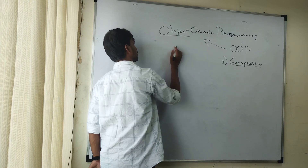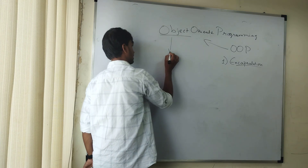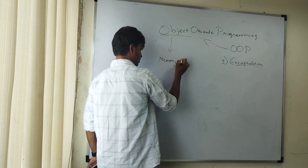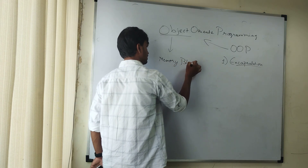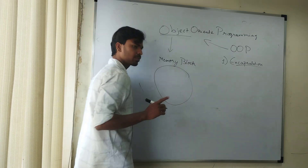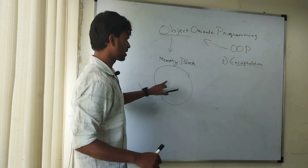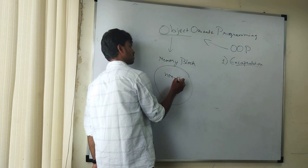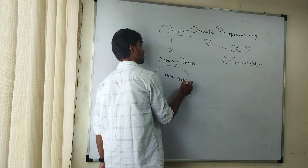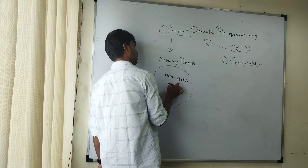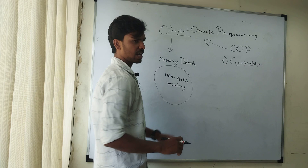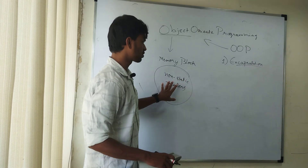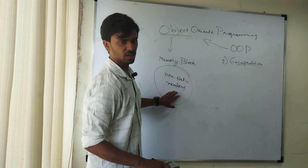When it comes to objects, what is an object? An object is actually a memory block, which is created by the developer. It is used to store all non-static members. The members which are declared without using the static keyword are known as non-static members.